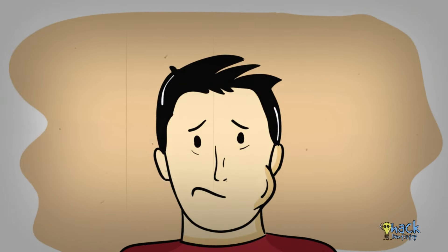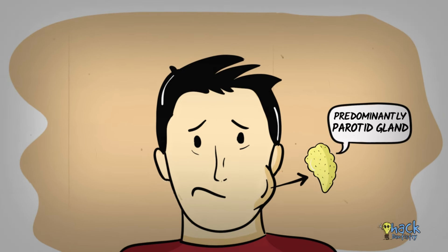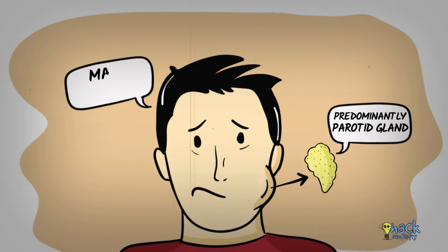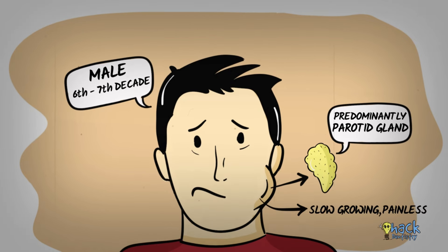Warthin's tumour is almost always restricted to the parotid gland, with very rare instances of manifestation in the submandibular or other minor salivary glands. It predominantly manifests in males in the 6th to 7th decade and presents as a slow-growing, painless, nodular mass, usually 3 to 4 cm in size.